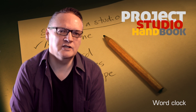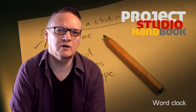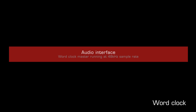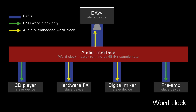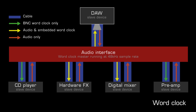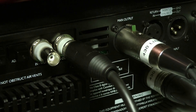Word clock is a timing signal passed between devices on a digital audio network. One device is set as the clock master, and its job is to generate and send a word clock signal to the other devices on the network, each of which are set to slave to it. This ensures that the timing of all devices is synchronised. Word clock is embedded in almost all digital audio signals, or can be sent as a separate signal, commonly referred to by the connector it uses: BNC.